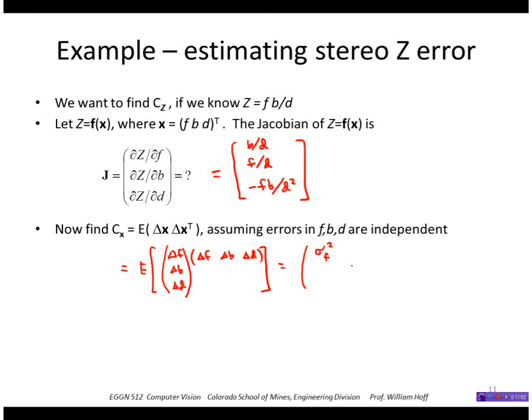We will get just the elements along the diagonal here. So we would get the variance of f, the variance of b, and the variance of d, with zeros here.